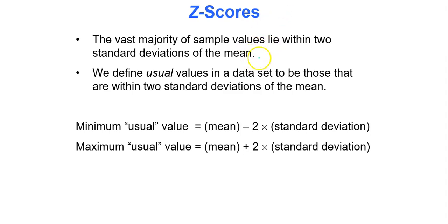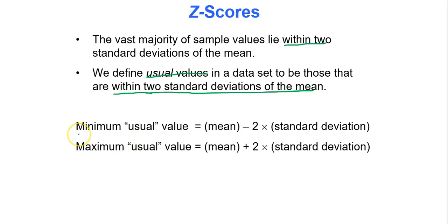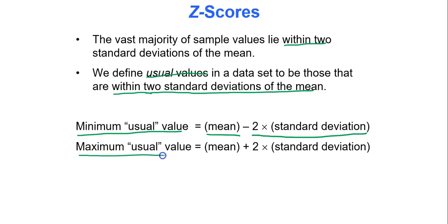The vast majority of sample values lie within two standard deviations of the mean. Z-scores between negative two and two are considered 'usual.' To find the minimum usual value for a data set, take the mean and subtract two times the standard deviation. To find the maximum usual value, take the mean and add two times the standard deviation. That's how you find the minimum and maximum usual values.